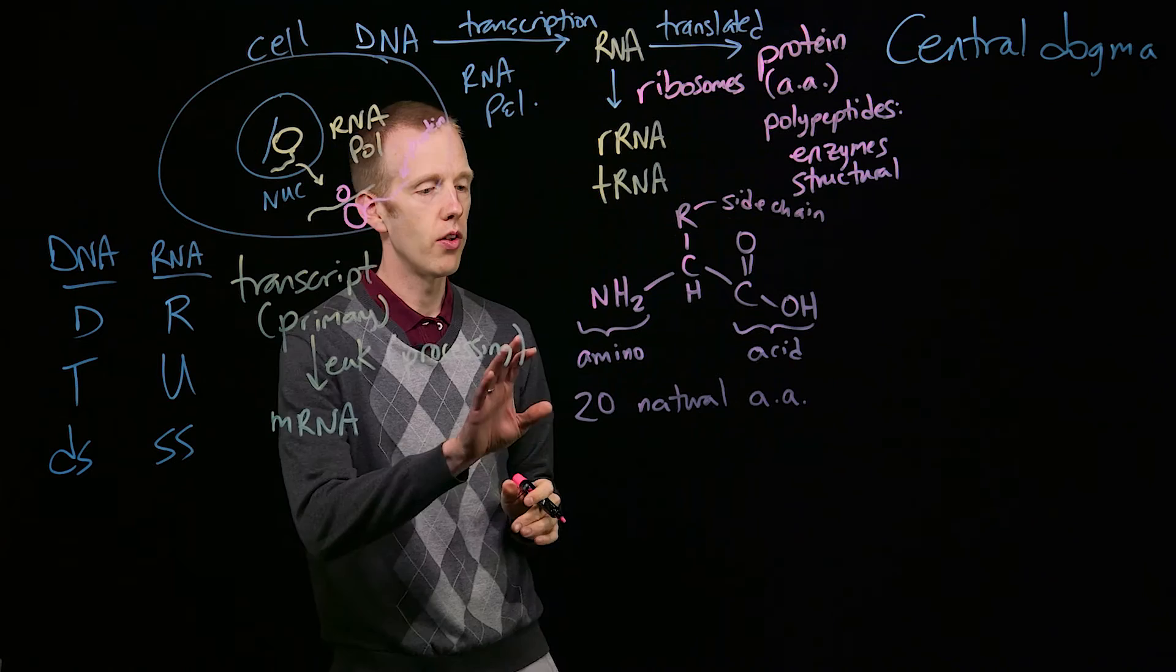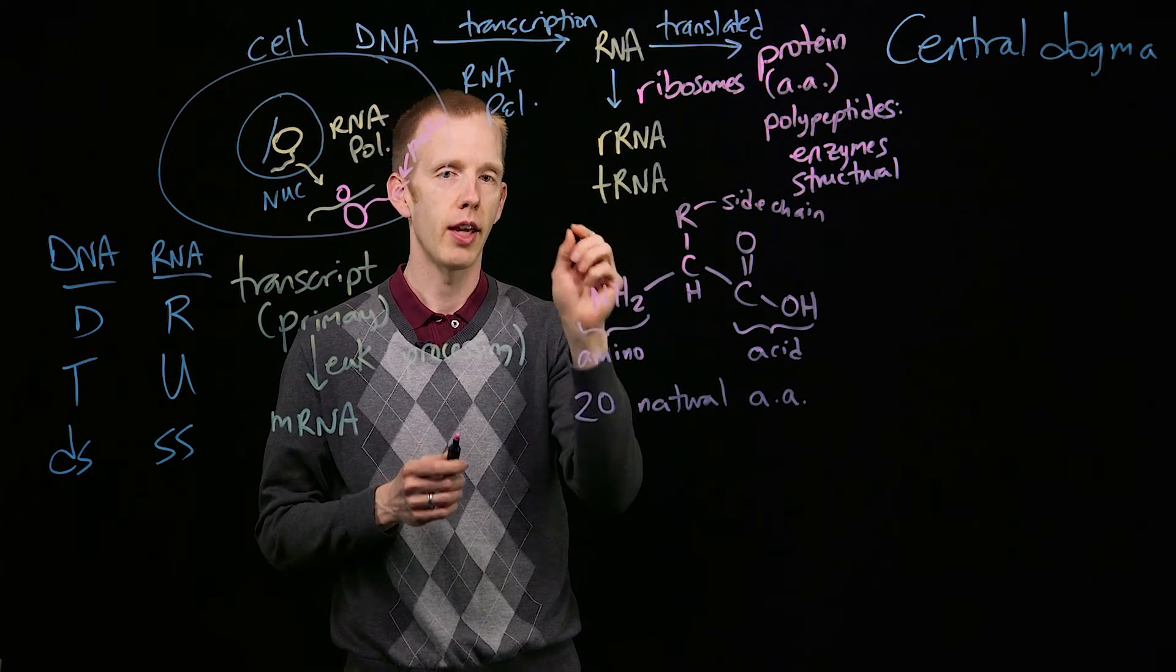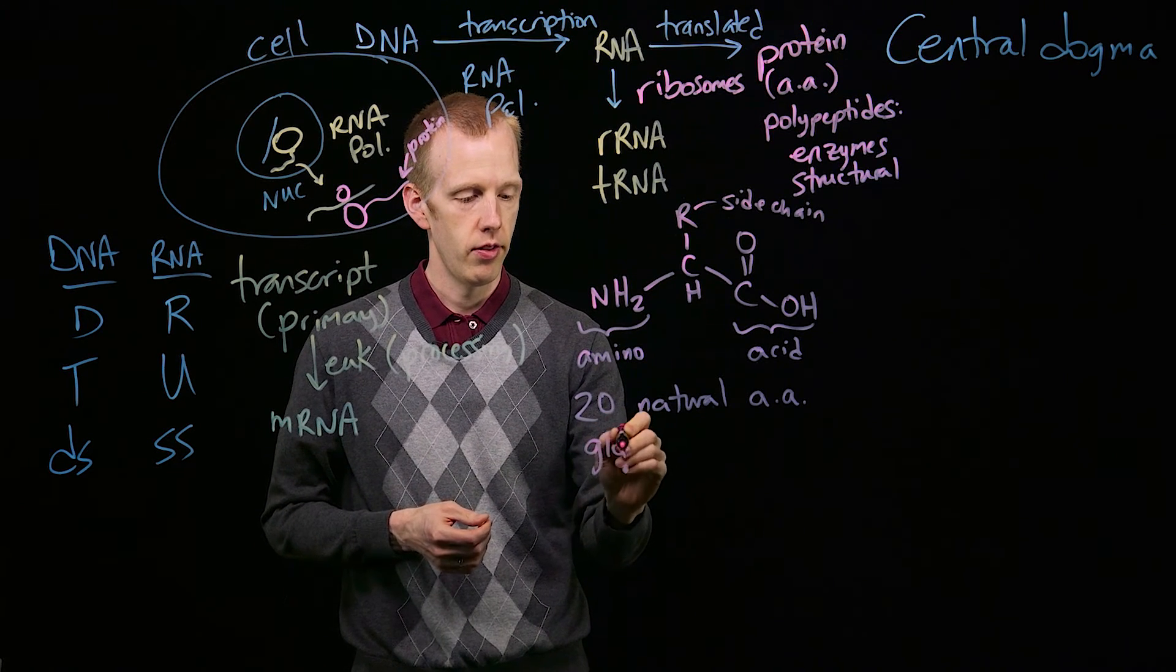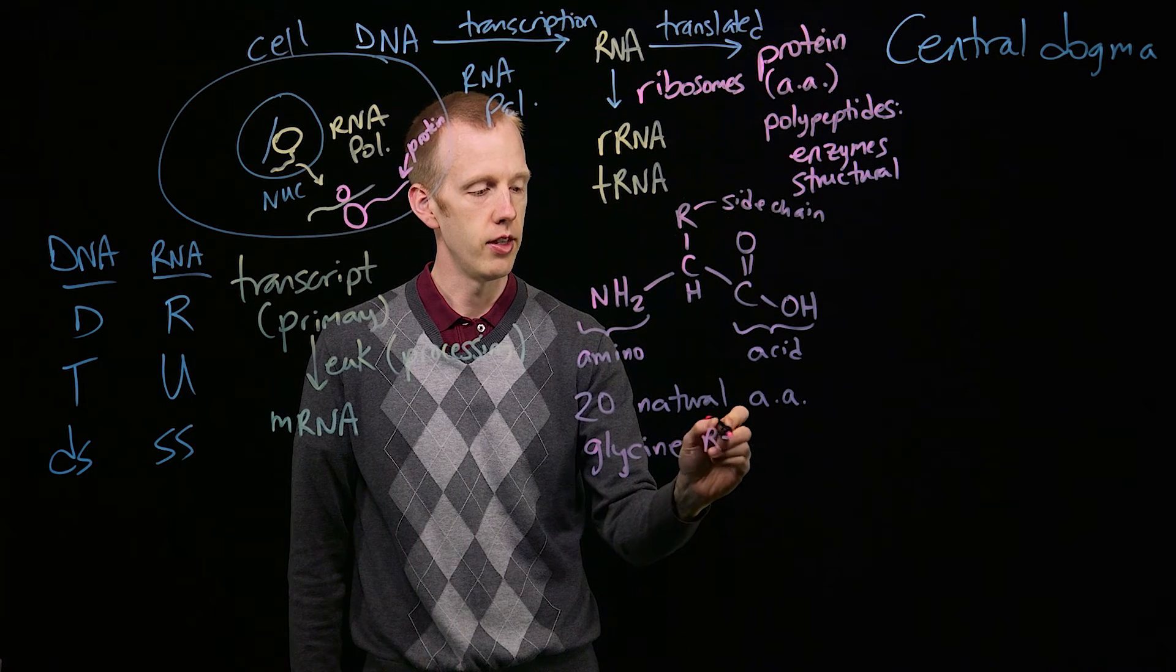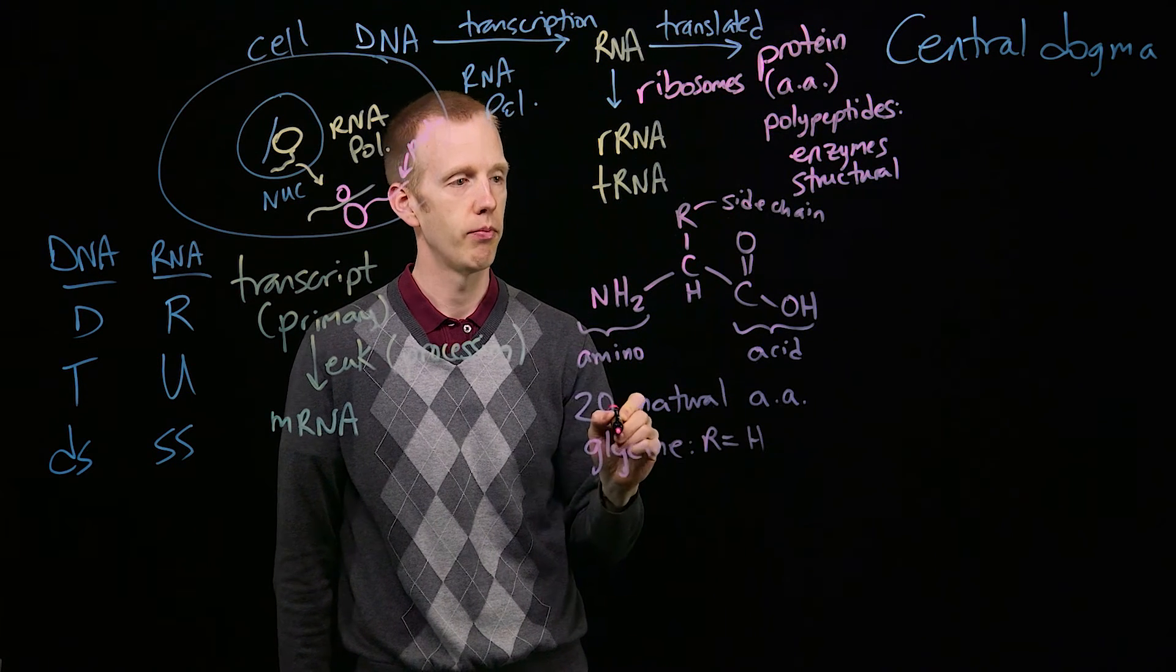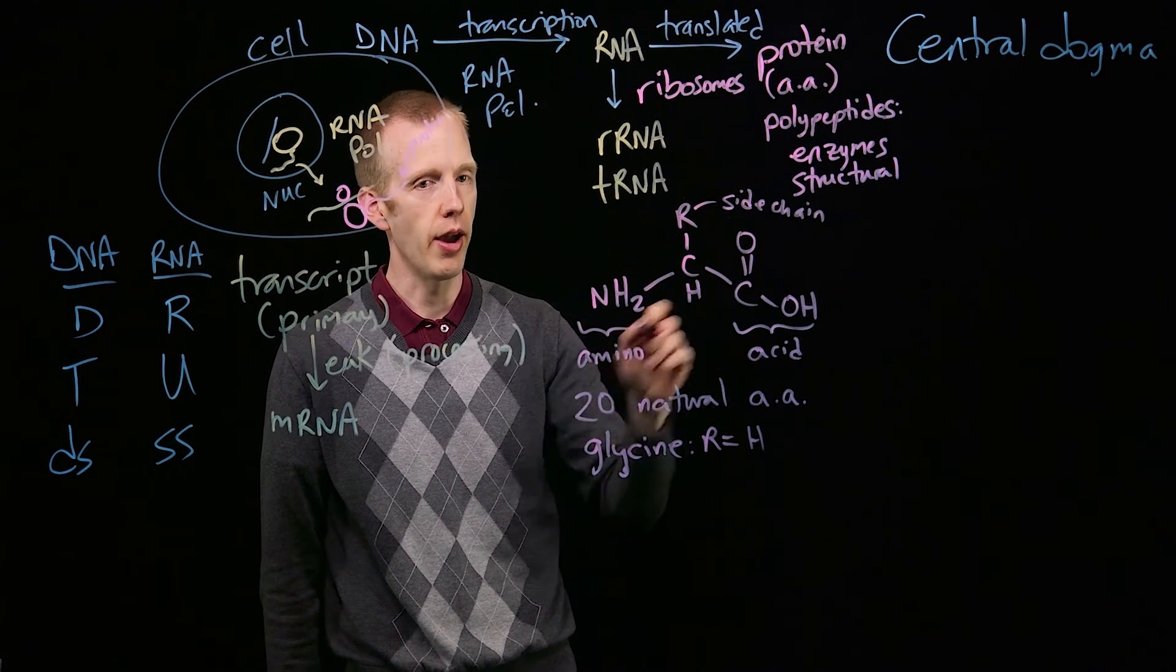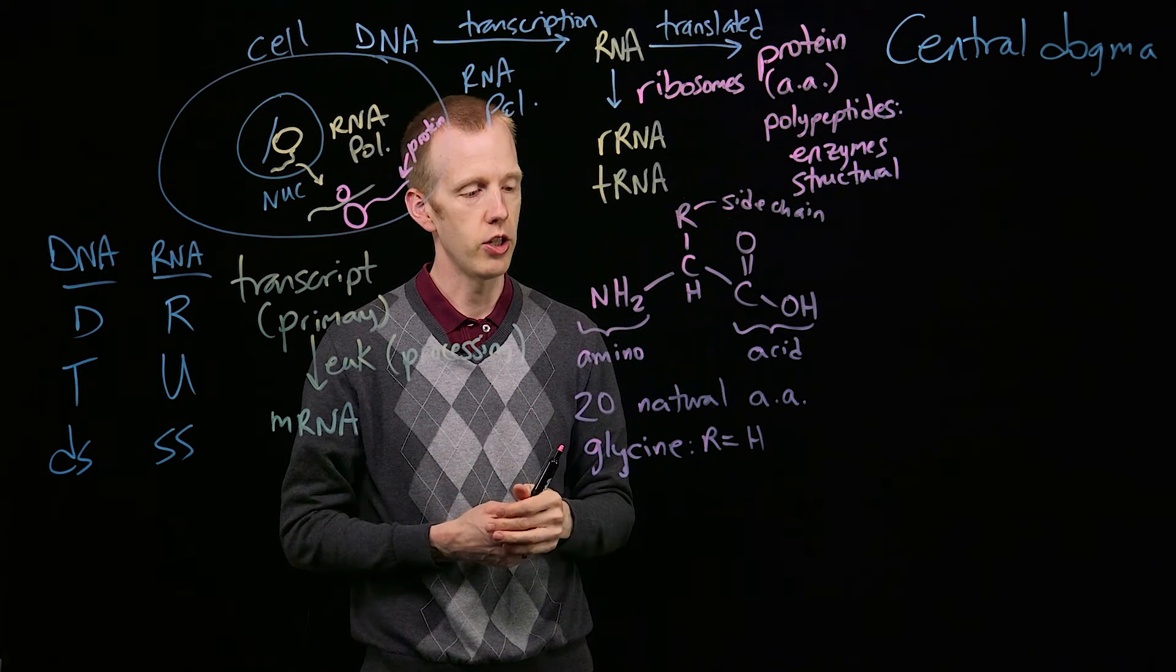And those 20 different amino acids differ at this location, the chemical structure of their side chain. For example, the smallest amino acid, glycine, R is a hydrogen atom. So if it was NH2, CH2, COOH, that would be glycine. Other amino acids have different R's, or side chains.